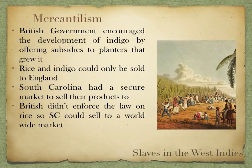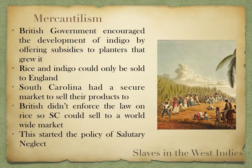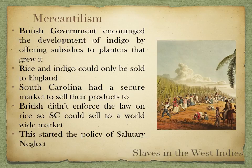The British didn't enforce the law when it came to rice, so South Carolina could sell to anybody — France, Portugal, Spain. They could sell that Carolina gold all over the place. This started the policy of salutary neglect, where you don't enforce policy. Mercantilism says you only trade with your mother country, but South Carolina had an exception with rice. Britain did not enforce the policy of only selling to the mother country, and South Carolinians were able to get rich off of that rice.